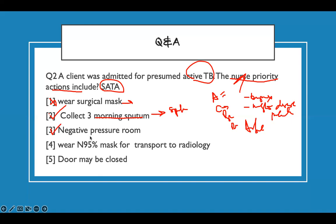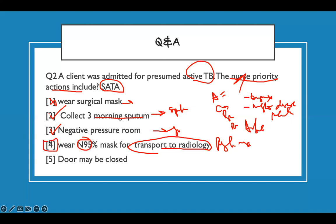Just know this organism is airborne, so stick with it. Wear N95 mask — yes. But for transport to radiology, this can trick you: when the patient leaves the room to get a study, they wear a regular mask — not the N95. The door must be closed — notice it says 'may be closed,' but it should say 'must be closed,' so that needs intervention.